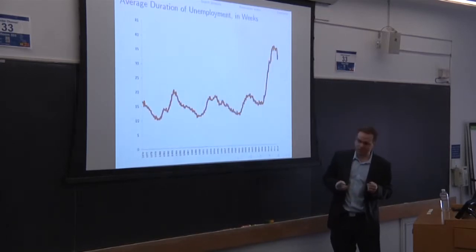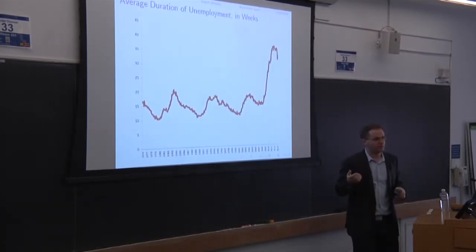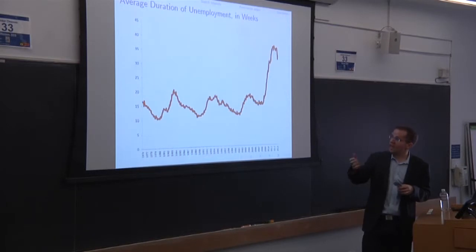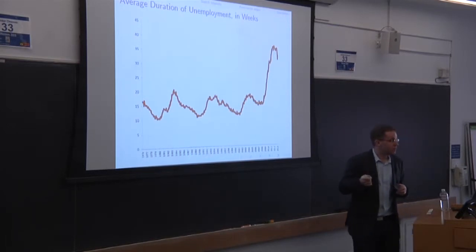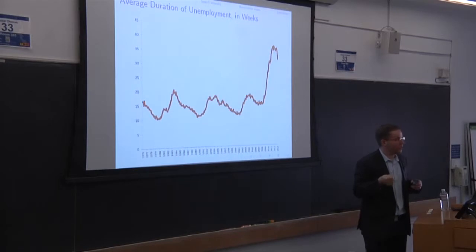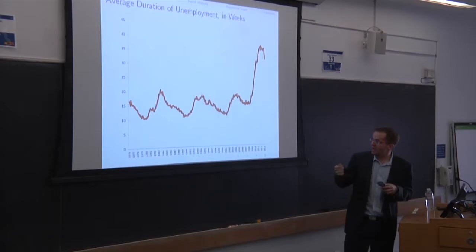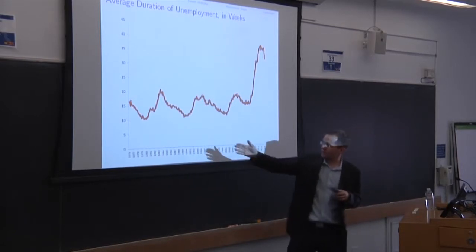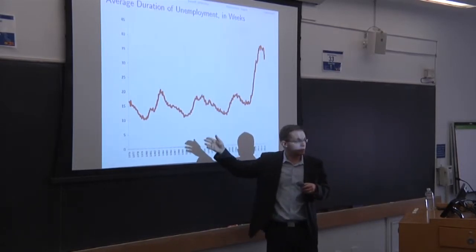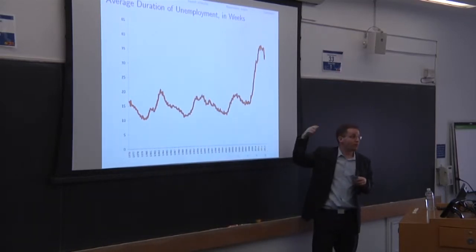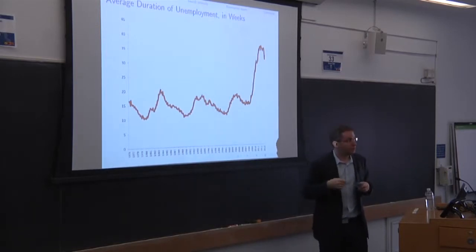So I thought I'd show you another graph which I think is really striking and shows some of the differences in which this recent recession has been different from previous recessions. What I'm showing you here is the average duration of unemployment in weeks, so how long an unemployed worker expects to be unemployed before he or she finds a job. And there's some tremendous differences. It fluctuates between 10 and 20 weeks in previous recessions. And in the more recent recession, we went from 15 to around 40 weeks of unemployment.